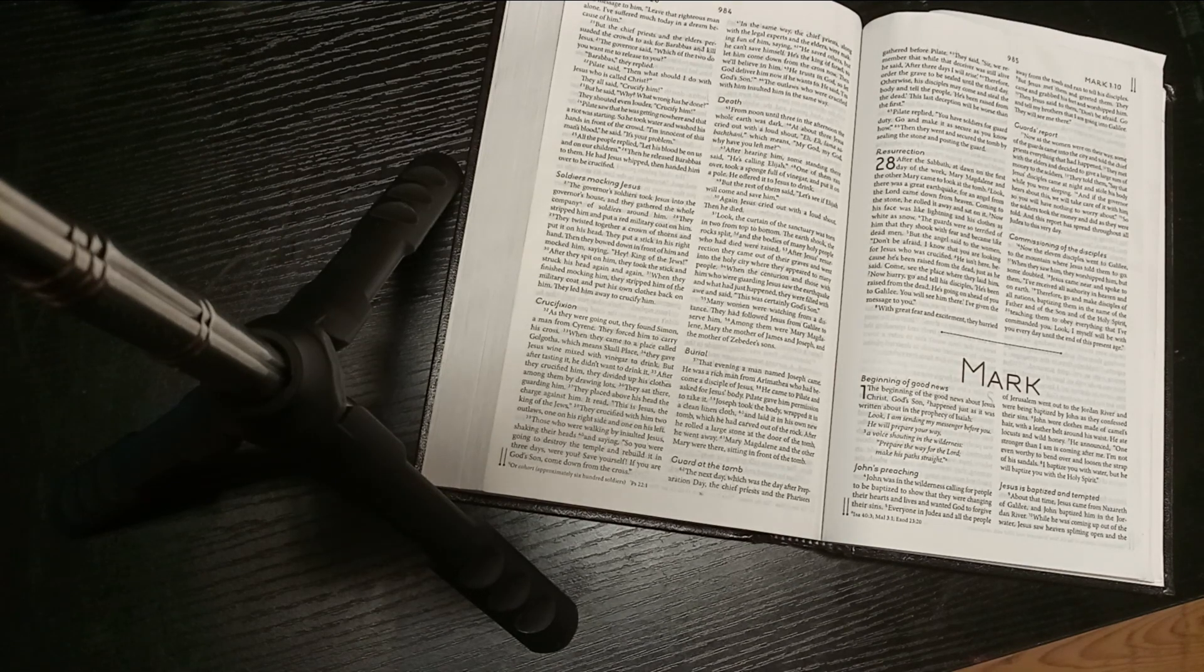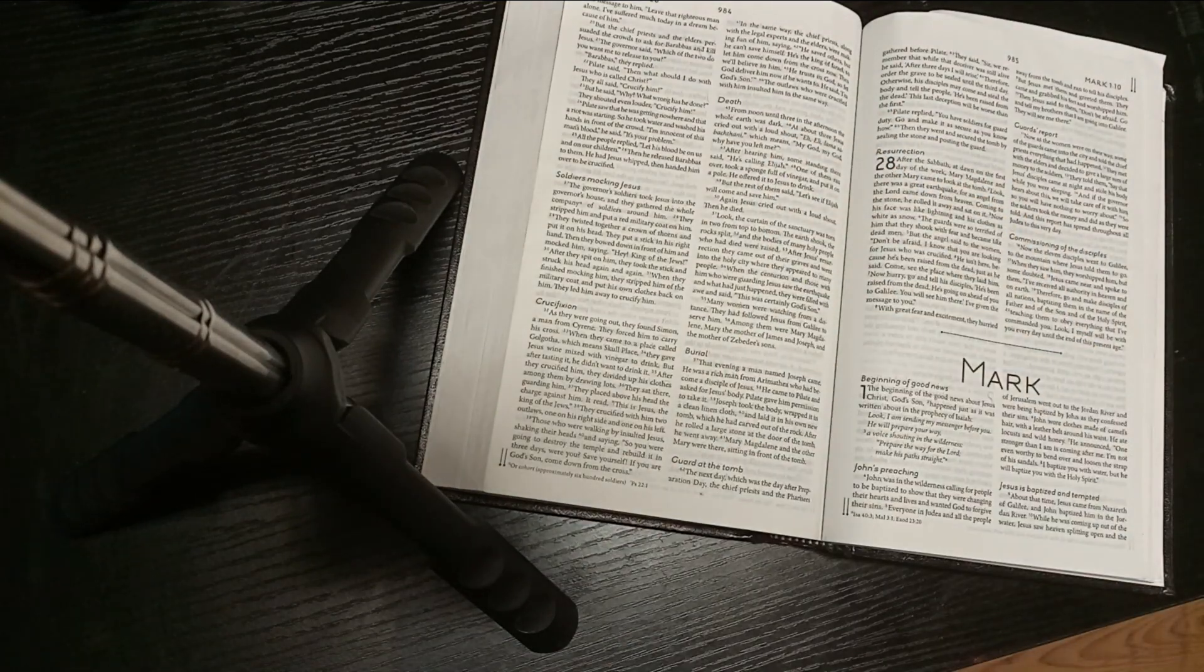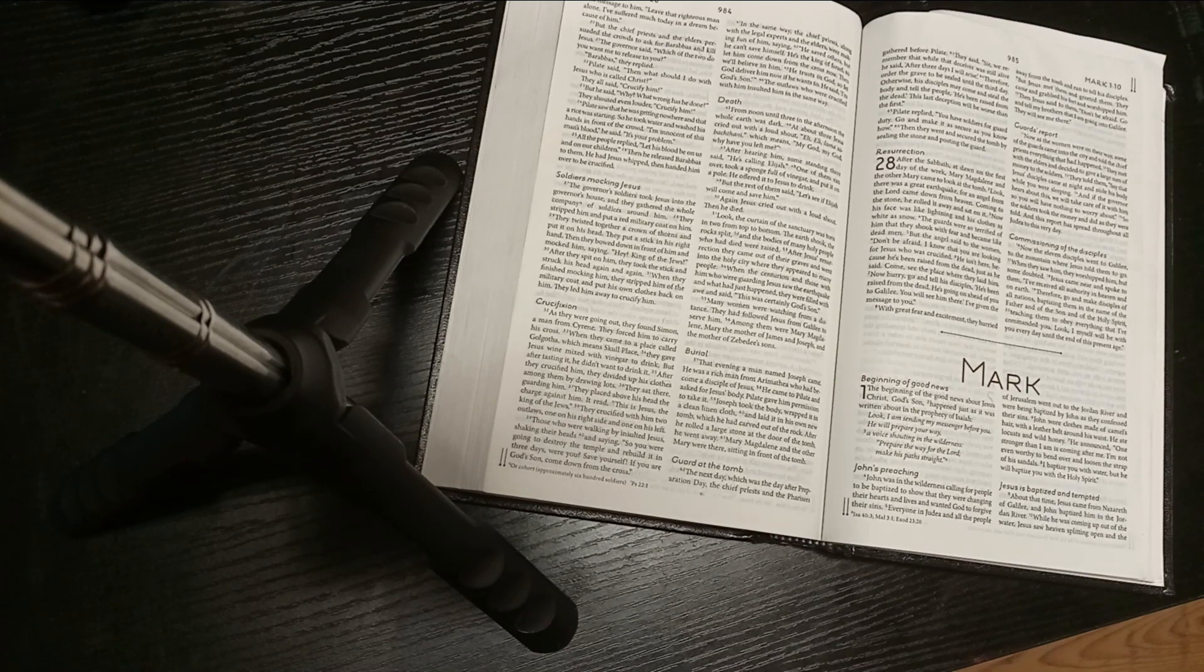That evening, a man named Joseph came. He was a rich man from Arimathea, also known as Joseph of Arimathea. He had become one of Jesus' disciples. He came to Pilate and asked for Jesus' body. Pilate gave him permission to take it. Joseph took the body and wrapped it in a clean linen cloth and laid it in his own new tomb, which he had carved out of a rock. After he had rolled a large stone at the door of the tomb, he went away. Mary Magdalene and the other Mary were there, sitting in front of the tomb. So they knew where the tomb was.